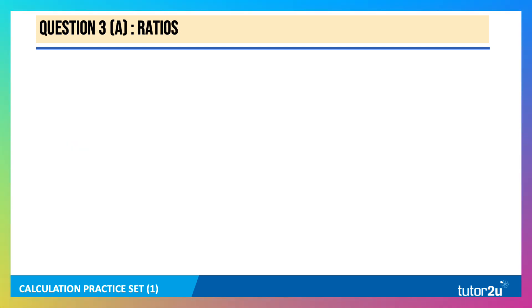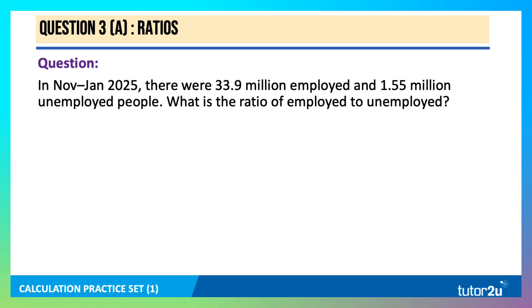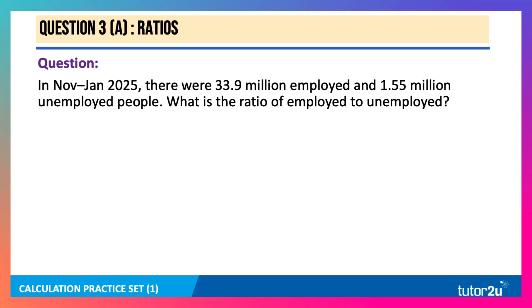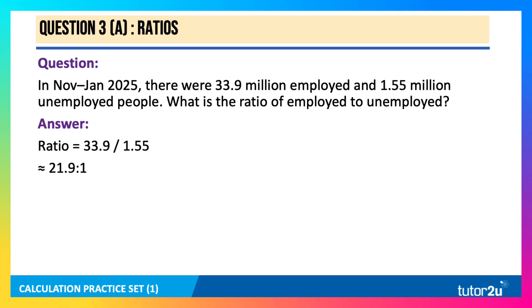Let's move on to question three: a quick question on ratios. In November to January 2025, there were 33.9 million people employed and 1.55 million people unemployed. What is the ratio of employed to unemployed? The ratio is 33.9 divided by 1.55, which gives approximately 21.9 to 1.